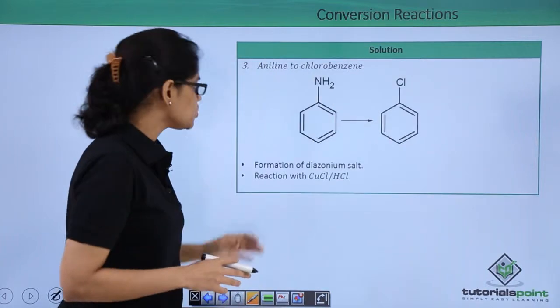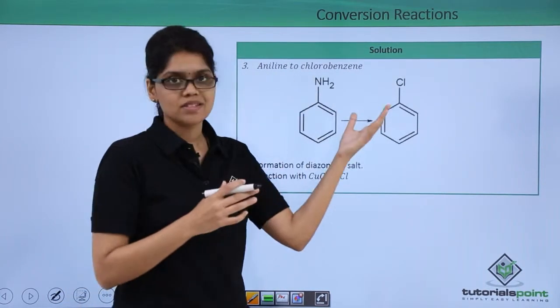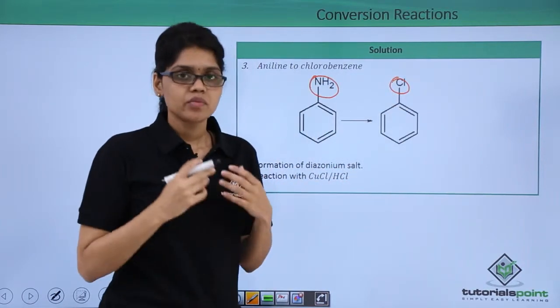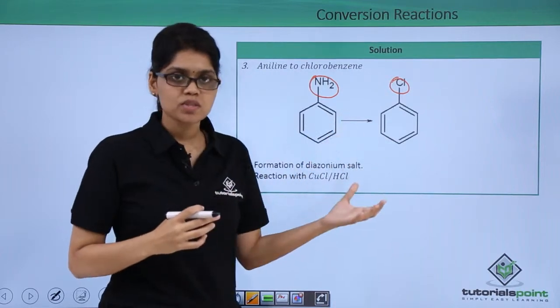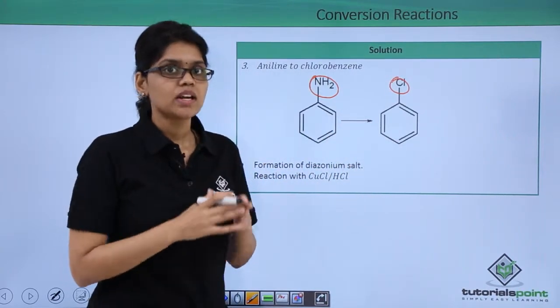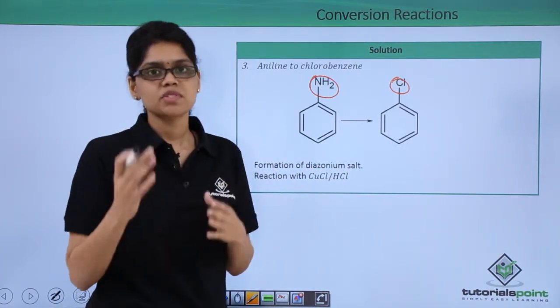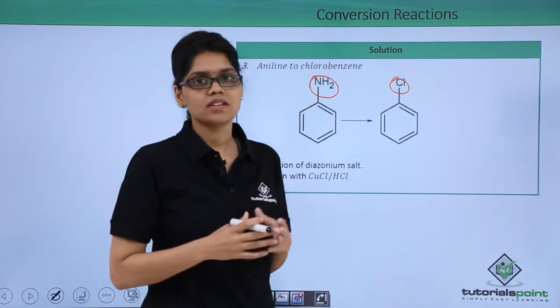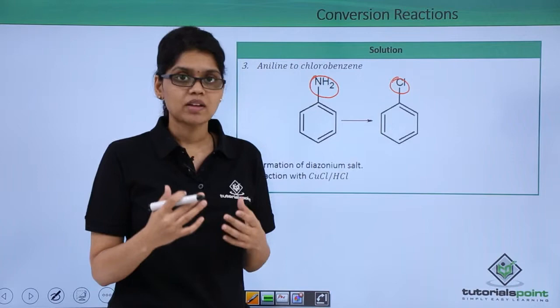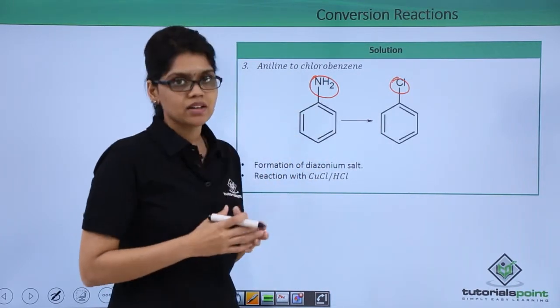Let's go to the next reaction. Here we need to convert aniline into chlorobenzene - that is NH2 has been substituted by chlorine. Here again we know that direct substitution is not possible because NH2 is a very poor leaving group. Therefore, if we can convert this NH2 to diazonium salt and then perform substitution we will get chlorobenzene as the final product. For diazonium salt the requirement as a starting material is a primary aromatic amine which is aniline here.